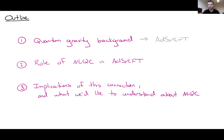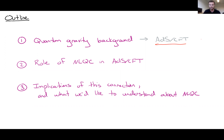In very broad strokes, the outline of what I want to talk about today is: first, I'm going to discuss some background in quantum gravity, and what I'll need to explain there is what's called the AdS-CFT correspondence. I'm not going to assume that you know anything about this — I'll explain exactly what you need to know at a pretty high conceptual level. Then second, I'll talk about the connection to non-local quantum computation. And finally, in the later part of the talk, I want to discuss some implications of this connection and the work I've been doing to try and understand those questions.